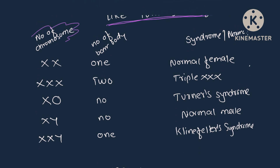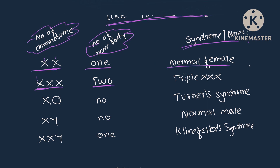When XX chromosomes are present, one bar body is present because one is functional and one becomes bar body — this is the normal female. When three X chromosomes are present, one remains functional while two bar bodies are present — this is Triple X syndrome. When only one X chromosome is present, it is functional so no bar body is present — this is Turner syndrome.